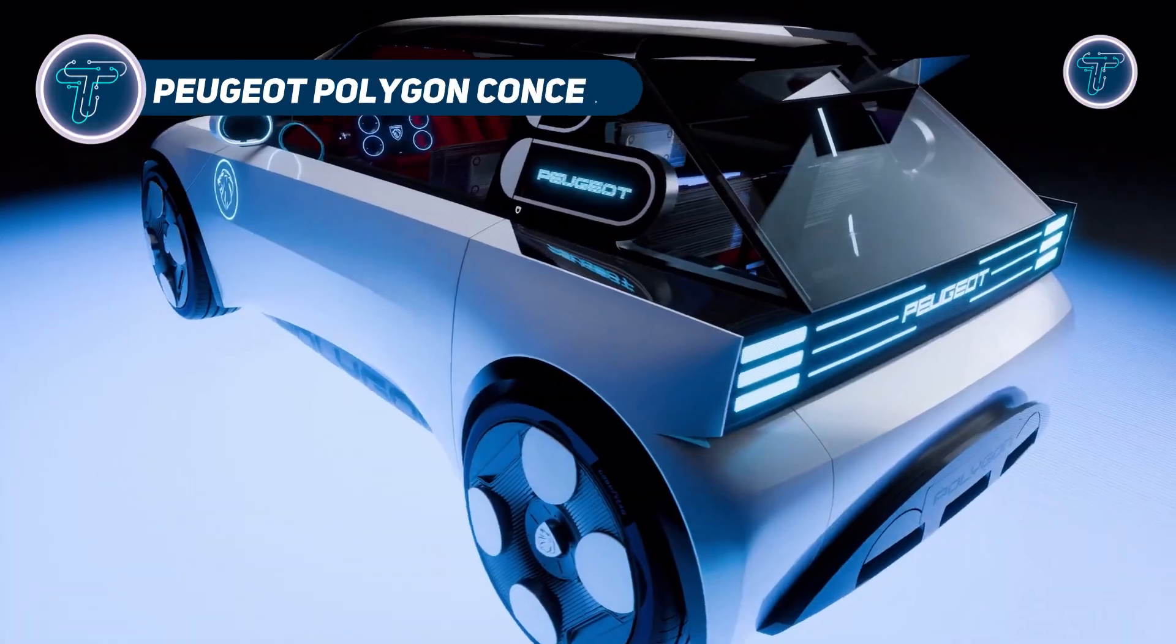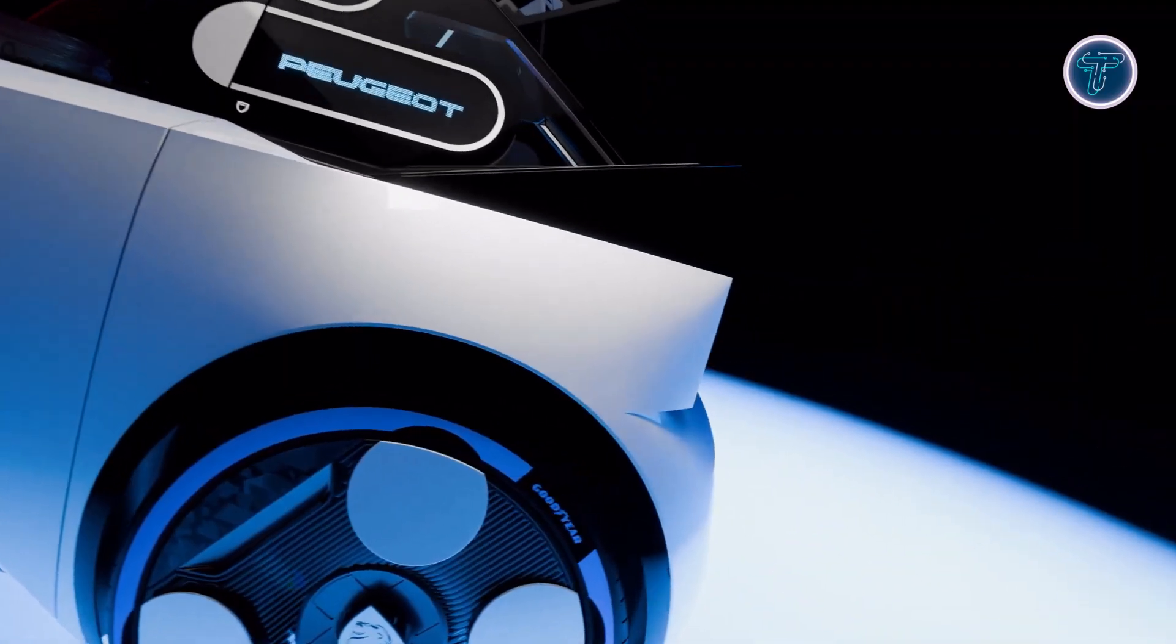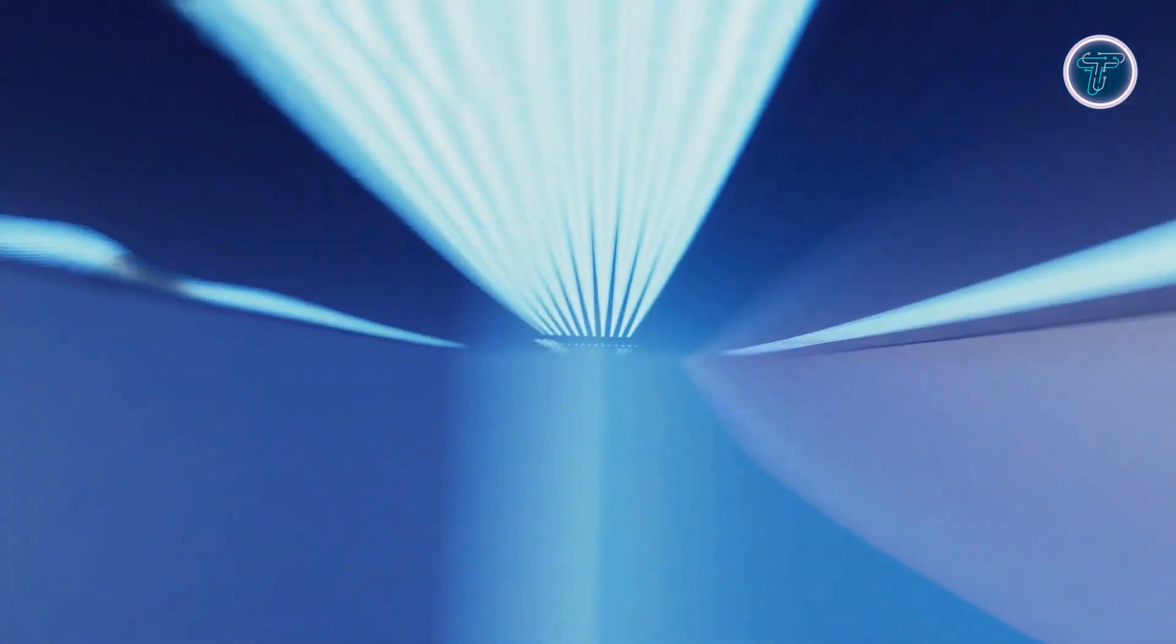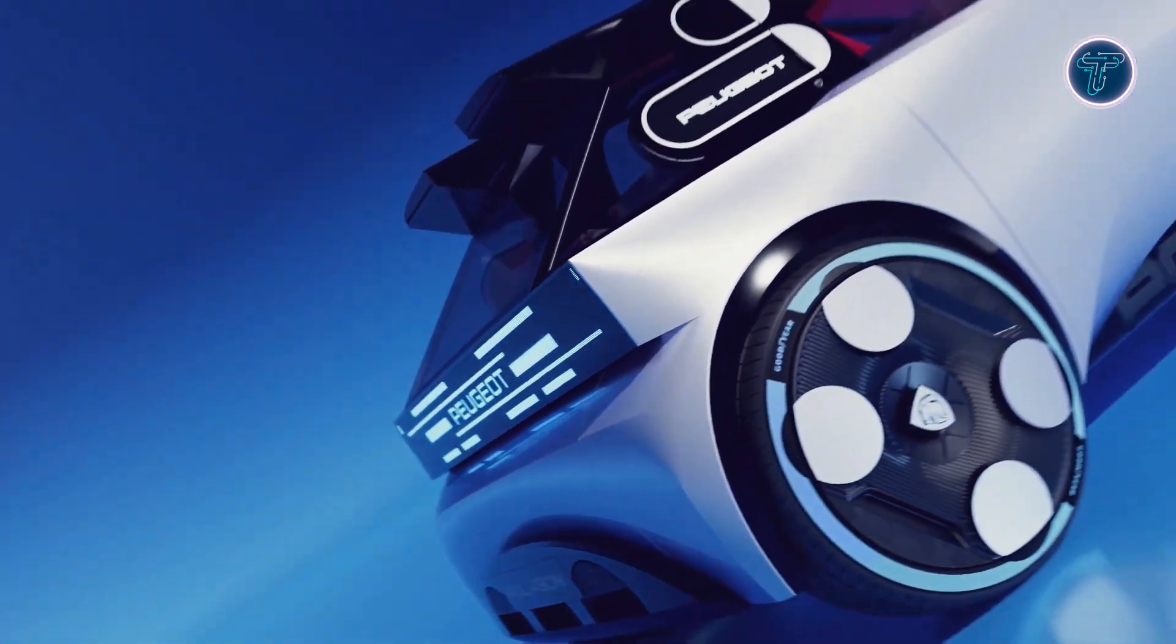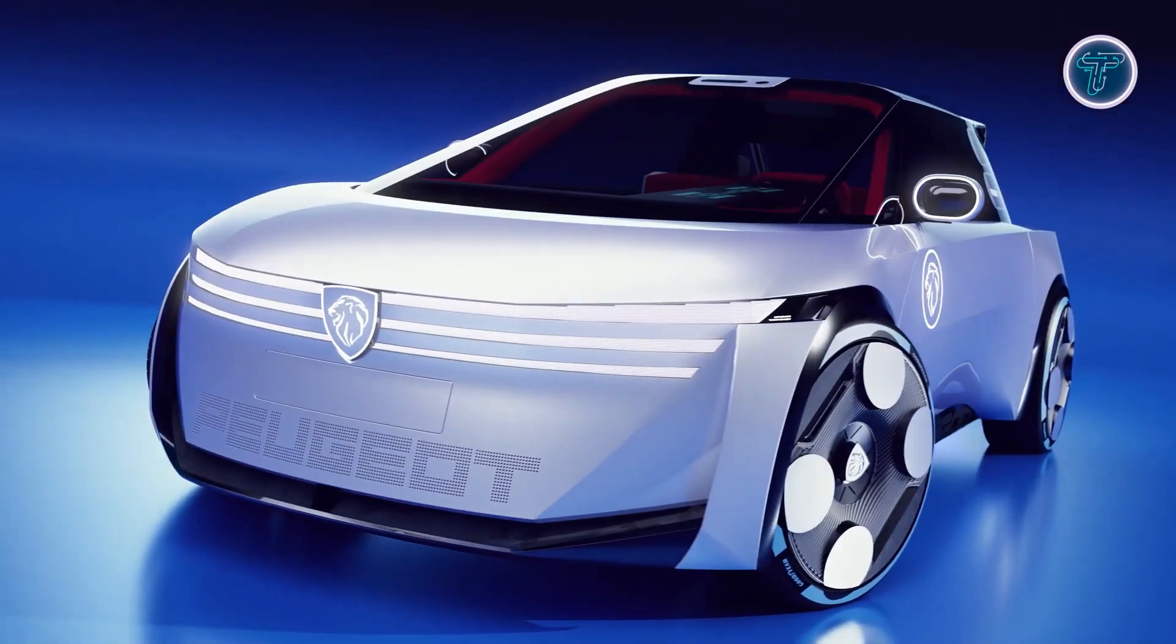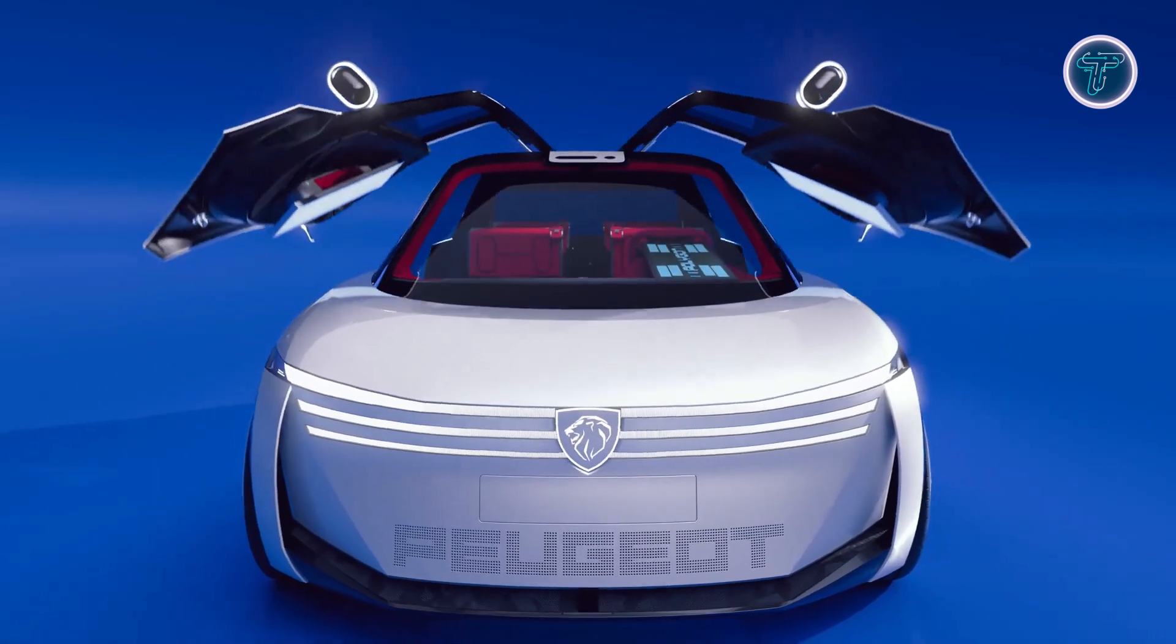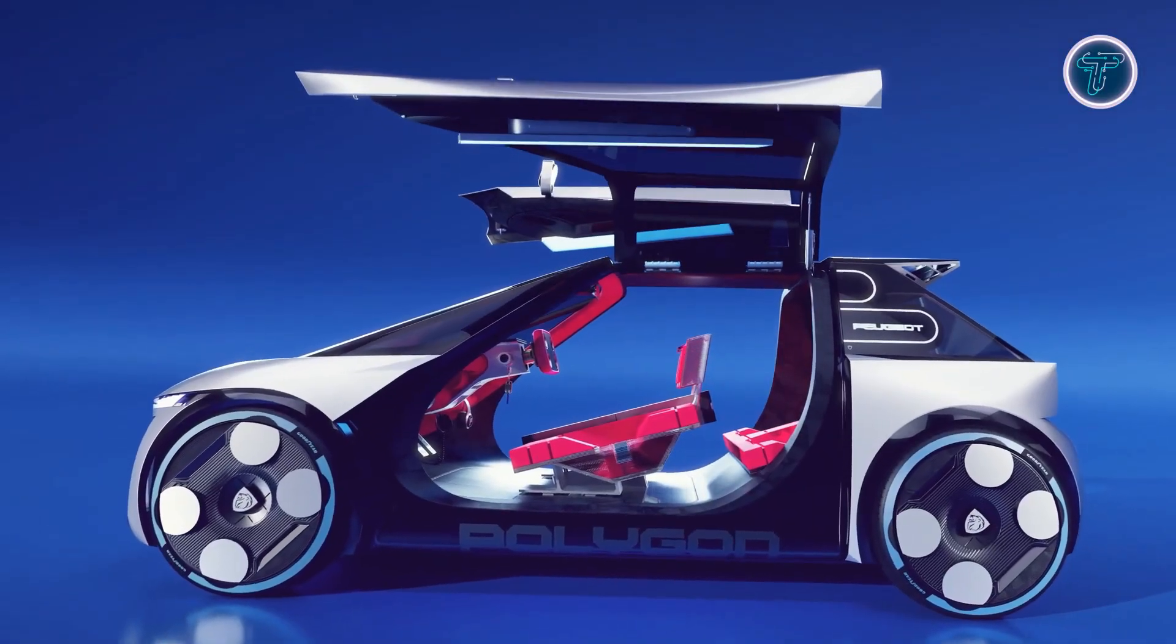Peugeot Polygon Concept. Peugeot's Polygon Concept introduces a striking new direction for compact electric vehicles, blending bold aesthetics with next-generation interaction. Its sharp geometric surfaces, animated micro-LED lighting, and distinctive feline stance make the car look alive, transforming familiar design cues into a futuristic display language.